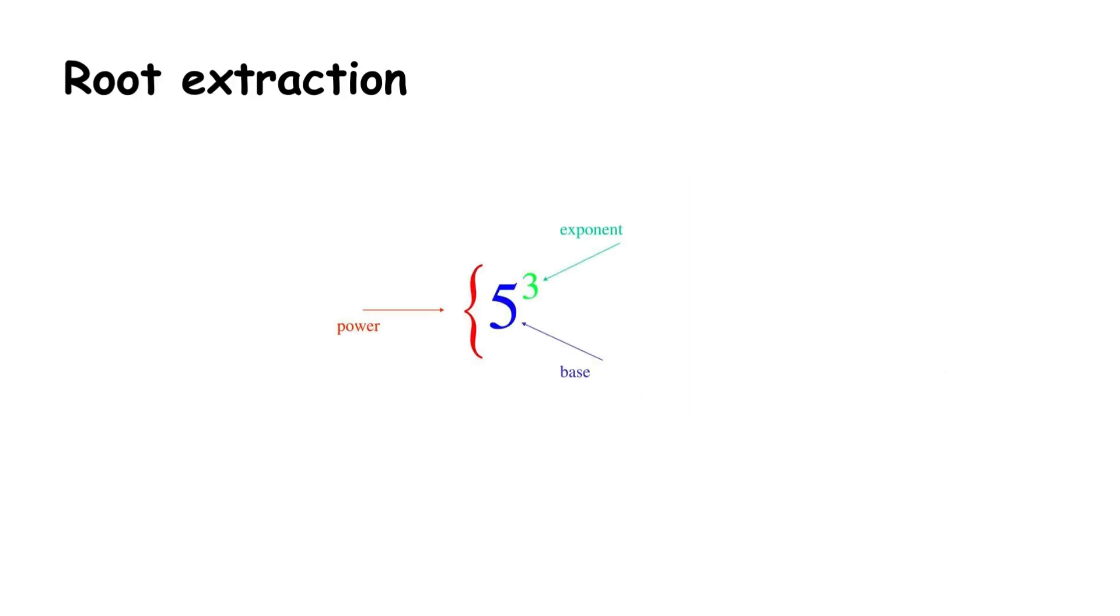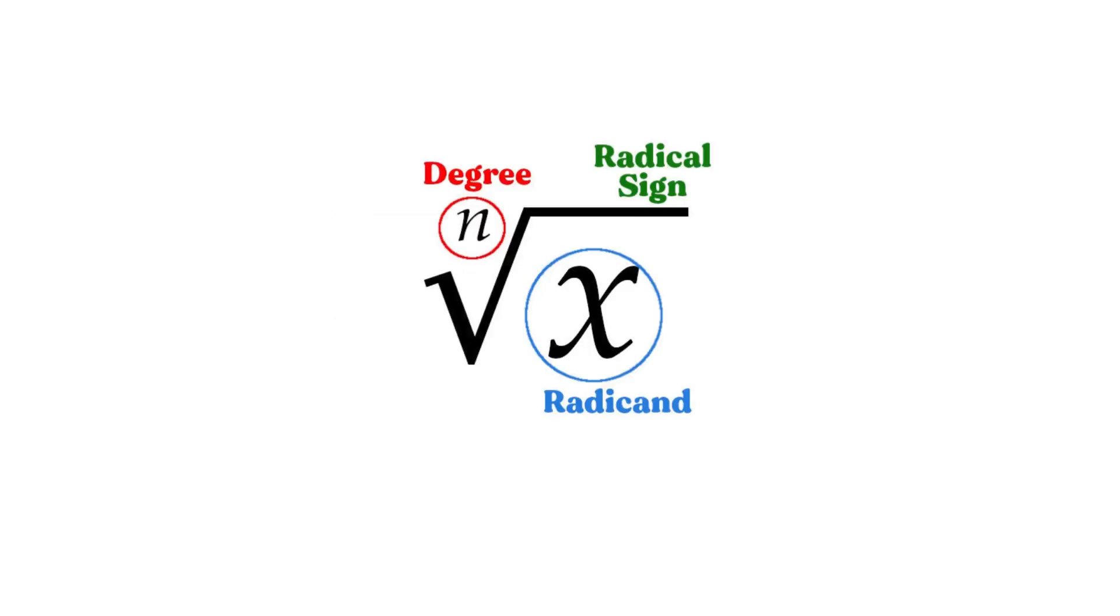Root extraction is a way of finding a base given an exponent and a power. It is denoted with a symbol called a radical. For example, since 8 is the third power of 2, 2 is the third root of 8, which is written like this.